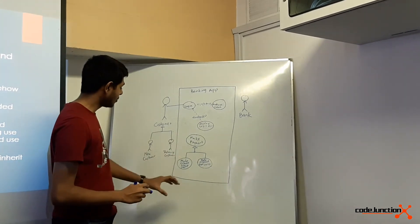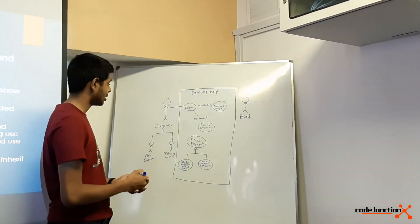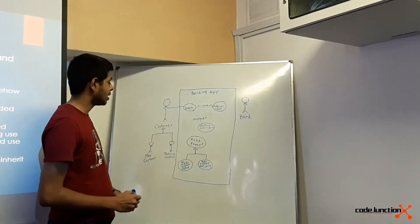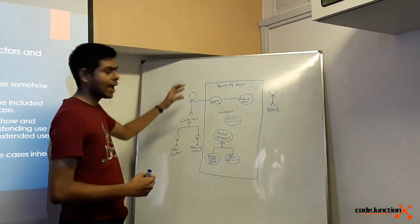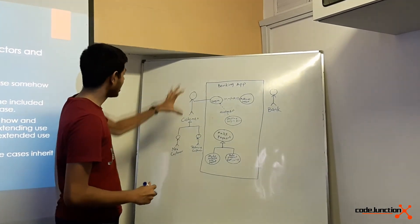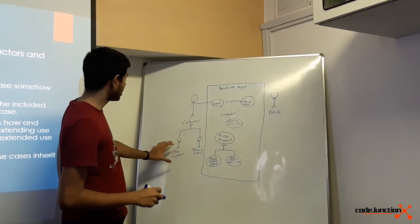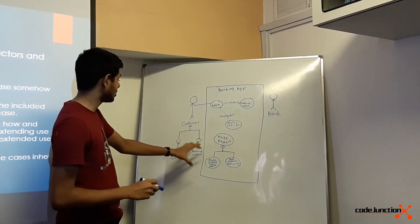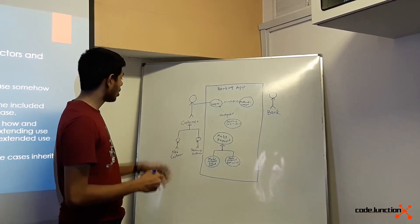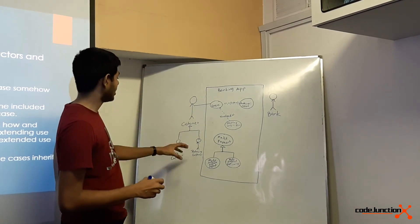Make payment from checking and make payment from savings have the common features which are inherited by make payment, which is the parent use case. And this is how actors are generalized: customer is the parent, and new customer and returning customer are the children. New customer and returning customer have common features of the parent, the customer.